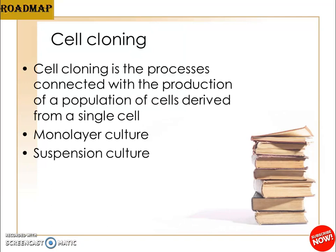Coming to cell cloning — in the traditional culture technique, cells are heterogeneous in nature, and isolation of a pure cell strain is important for various purposes. Cell cloning involves the process connected with the production of a population of cells derived from a single cell. Cloning of continuous cell lines is much easier compared to primary culture and finite cell lines, but there are certain limitations. Cells derived from normal tissues survive for a limited number of generations.